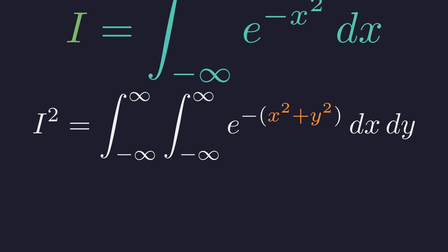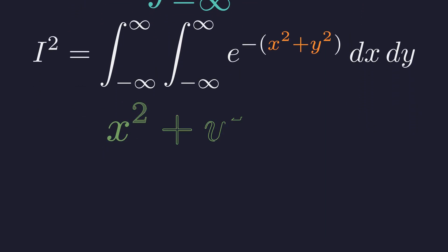And here's where things get interesting. x squared plus y squared is just r squared in polar coordinates. In polar coordinates, x squared plus y squared equals r squared, where r is the distance from the origin. So let's convert everything to polar coordinates.